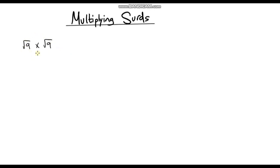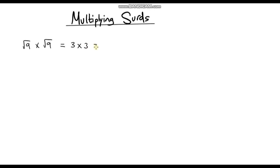So here I've got an example. We're going to do the square root of 9 multiplied by the square root of 9. Now at the moment, hopefully you can see that both of these are not surds because we can actually evaluate the square root of 9. So let's do this: the square root of 9 multiplied by the square root of 9. Well we can evaluate each number — the square root of 9 is 3, because 3 times 3 is 9. So this is literally 3 multiplied by 3, which we know is 9.